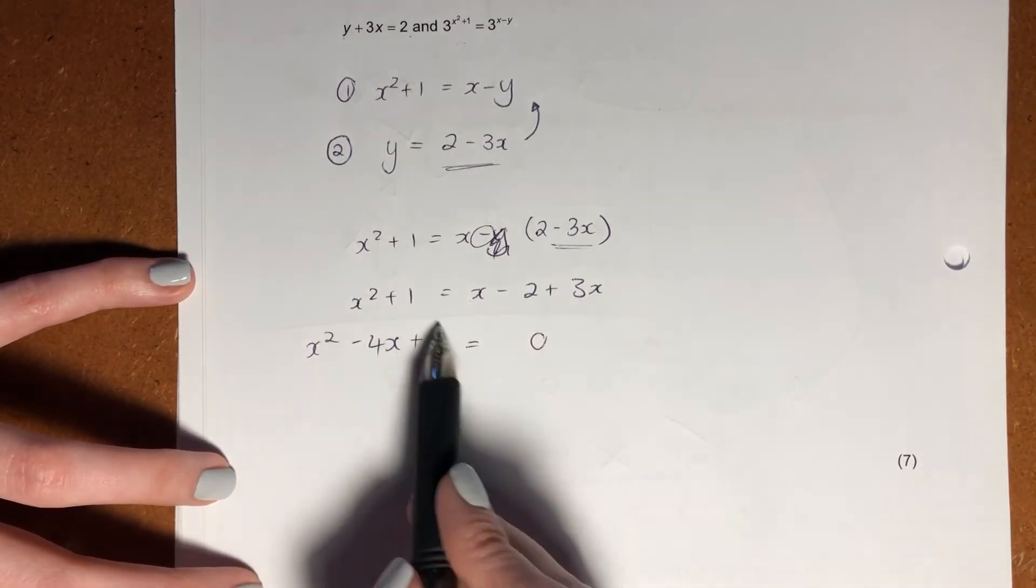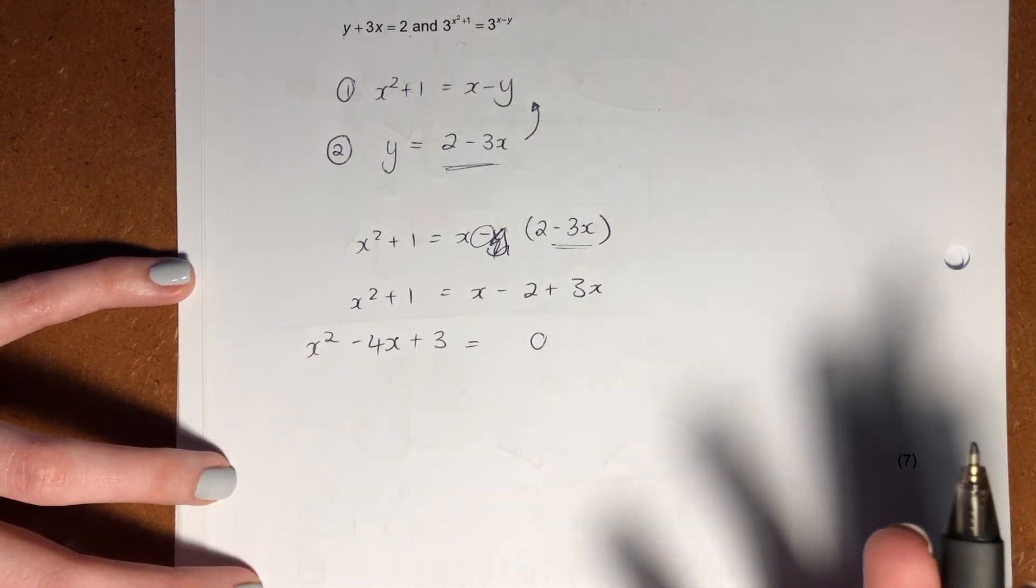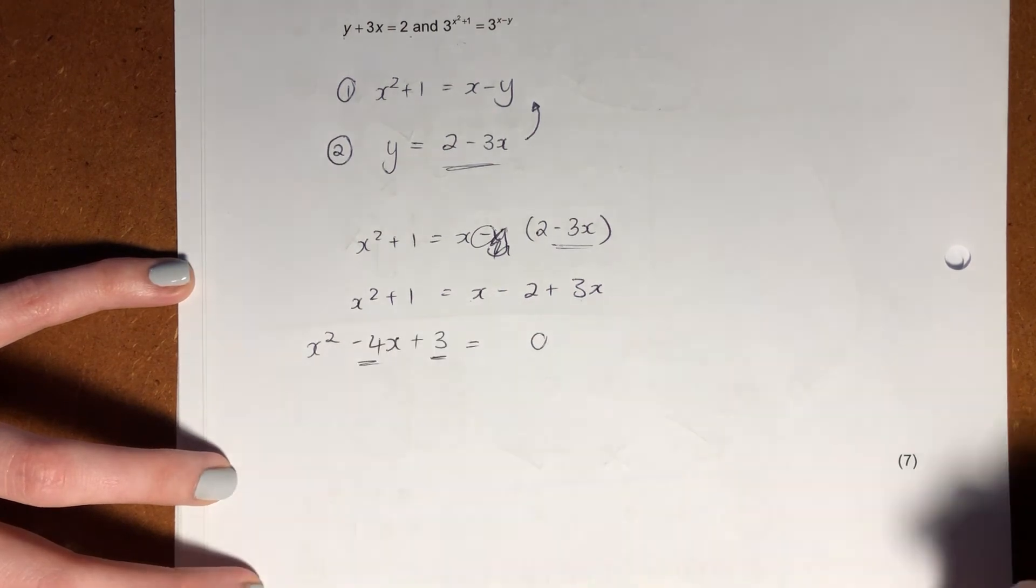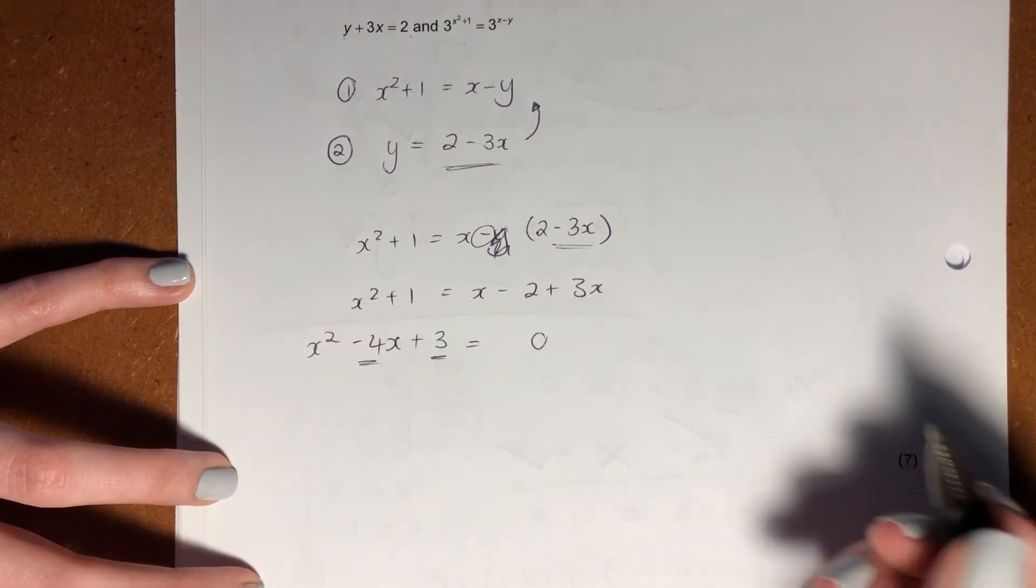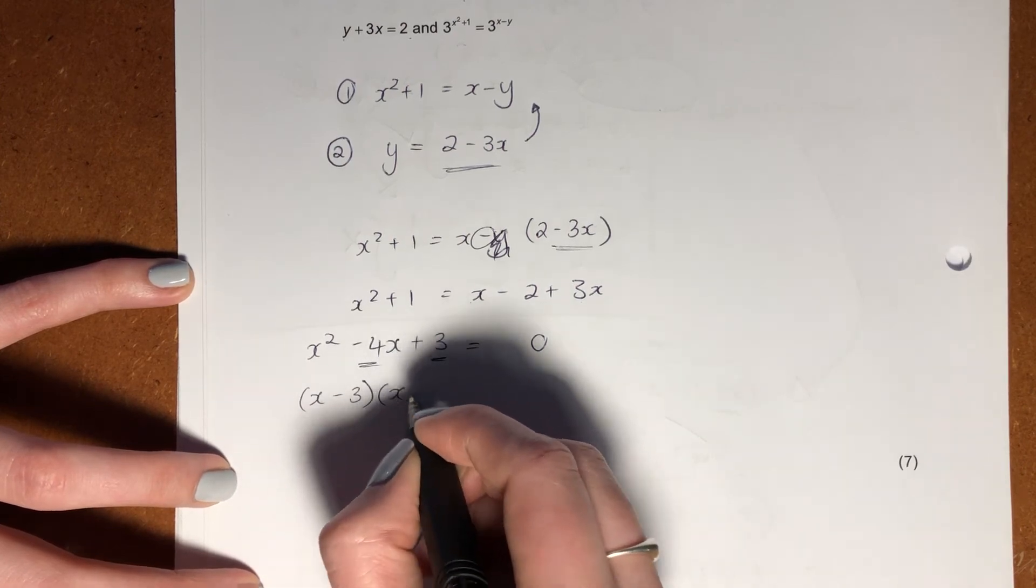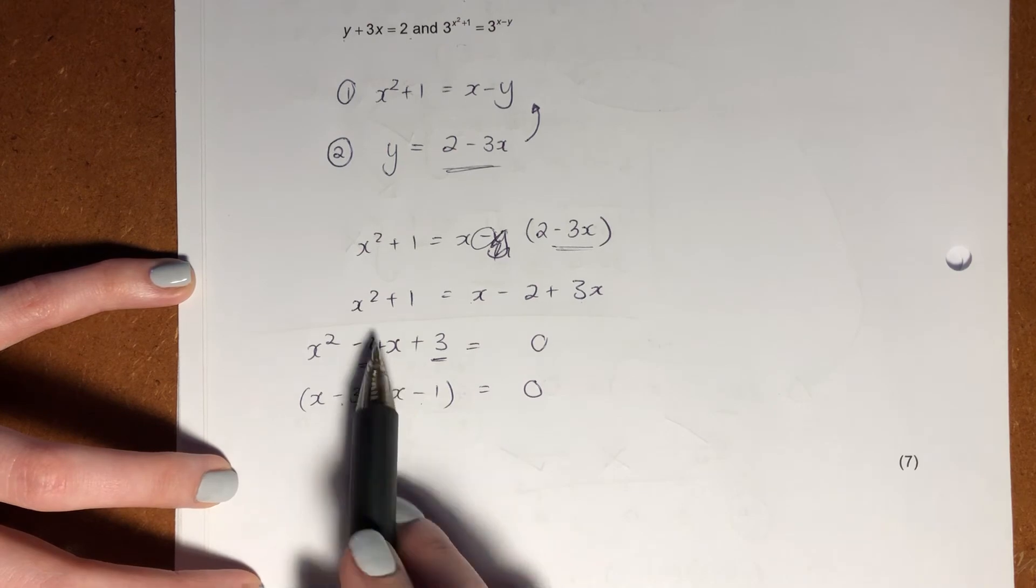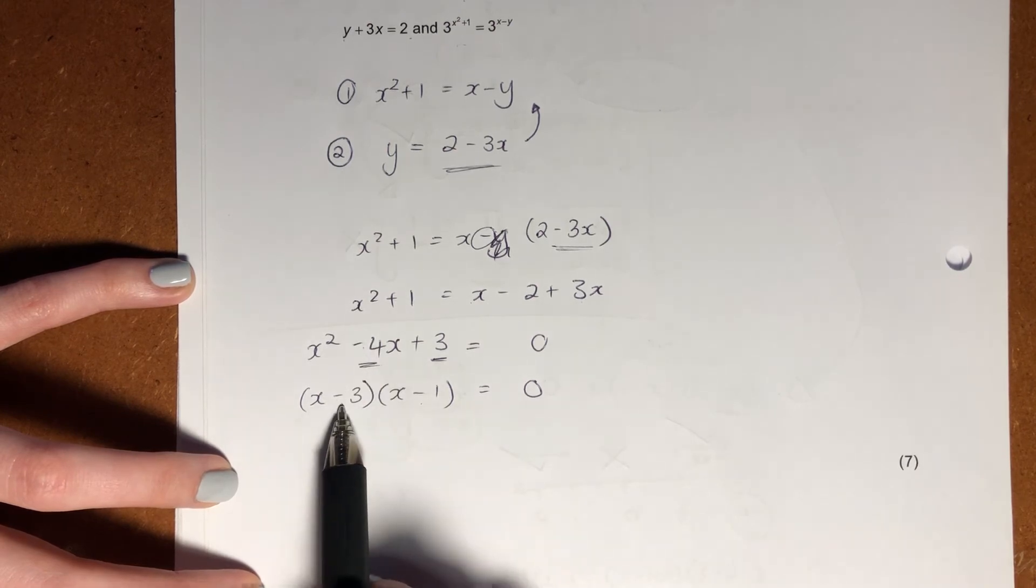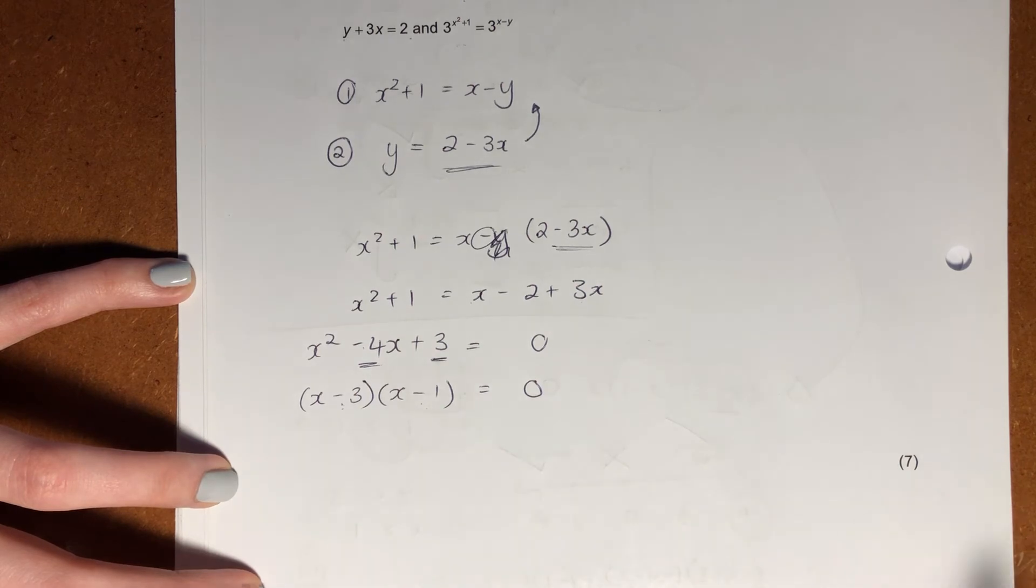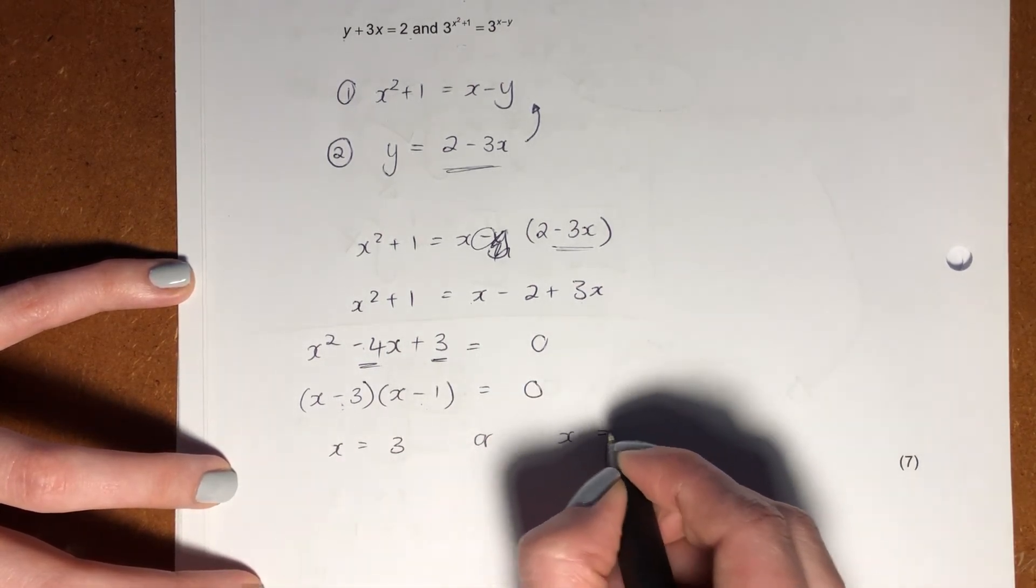So now what we have is we have a quadratic. This shouldn't scare you. You can put it in your calculator or you can do it in your head. What are my factors of my last term that will give me my coefficient of x? x is going to be x minus 3, x minus 1. Minus 3 minus 1 gives me minus 4. Minus 3 times by minus 1 gives me positive 3. We know that it's right.